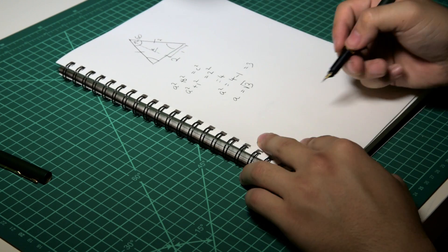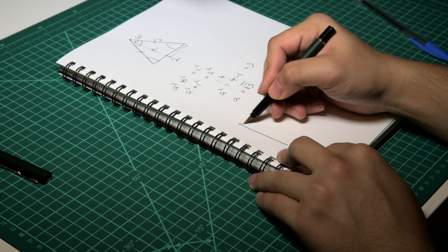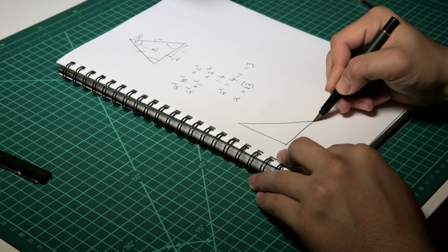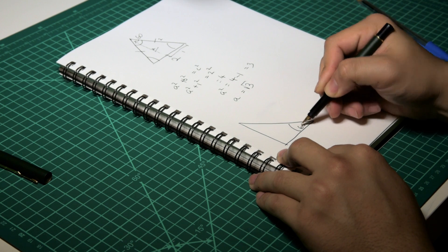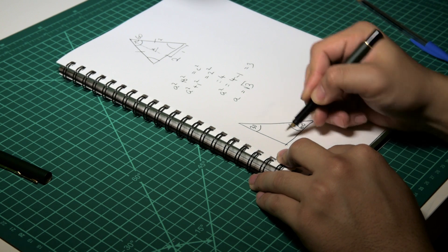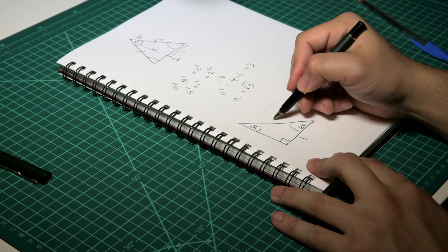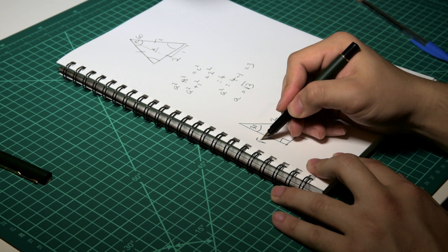Redrawing this triangle again for clarity. 60 degrees, 30 degrees, 90 degrees, sides of 1, 2, square root of 3.